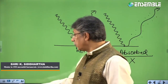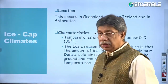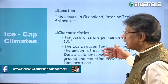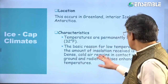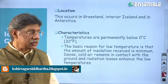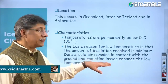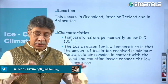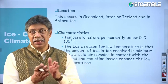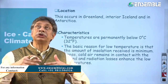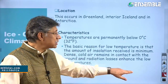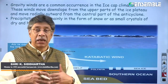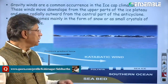In polar areas, there is a good amount of snow accumulation; temperatures are permanently below 0°C. The basic reason for low temperature is that the amount of insolation received is very low. Moreover, dense cold air remains in contact with the surface and close to the ground, and radiation losses enhance the low temperature. The air is cool and thin, and the amount of radiation going back into space becomes much larger — so the temperature drop is very sharp.